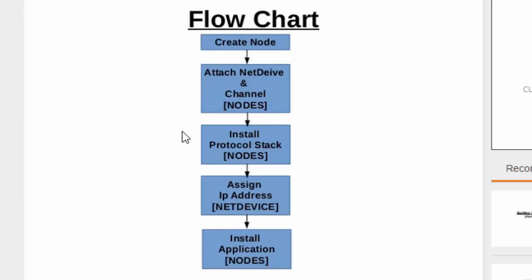You have to specify that these devices should follow particular protocols that you're interested in. After that, you assign the base IP address - in order to communicate over any network, an IP address is the base. It can be IPv4, IPv6, or maybe something custom for research purposes. After that, you install the application - by application here, it means something like FTP or a client-server application. This chart is really useful to understand what is actually happening behind the scene, and it's going to be the base for creating any kind of network topology.